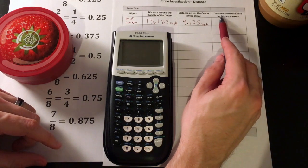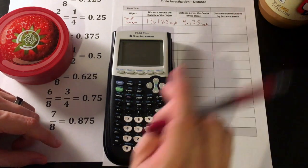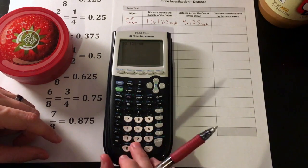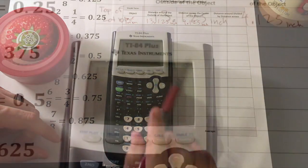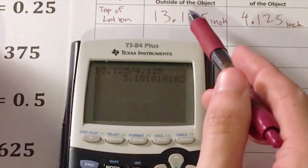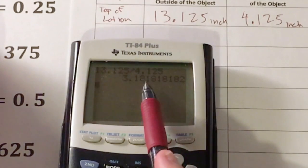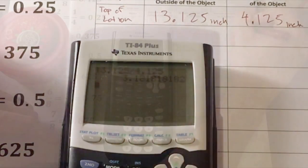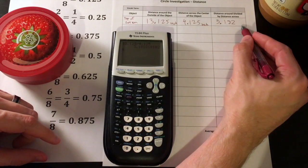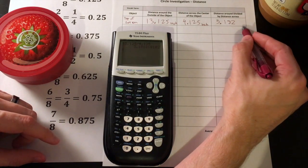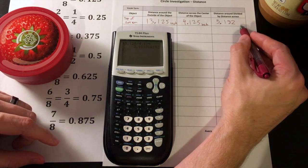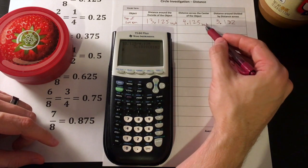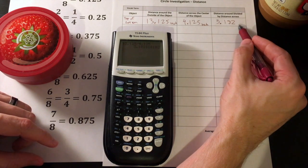So now let's record the distance around divided by the distance across. So I'm going to type in 13.125 divided by 4.125 and hit enter. And because I have 3 decimal places of accuracy here, I'm going to just use 3 decimal places of accuracy here, so 3.182. So should I write 3.182 inch, or just leave it blank? Yeah, we should just leave it blank, because this is a ratio, and this ratio was inch divided by inch. So this measurement is actually unitless.